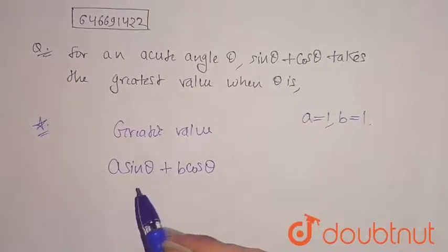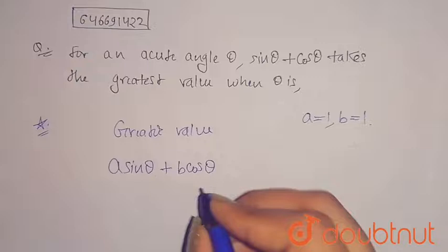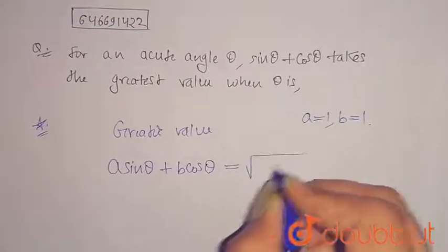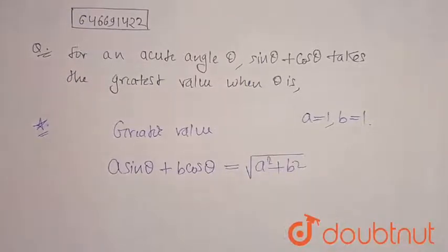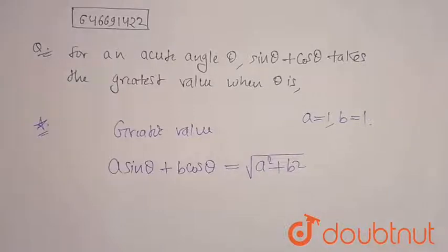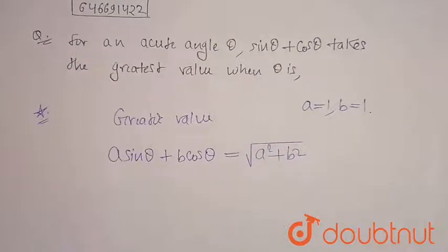This is my equation of finding the greatest value. Now this is basically equals to root a squared plus b squared. From this we can find the greatest value.